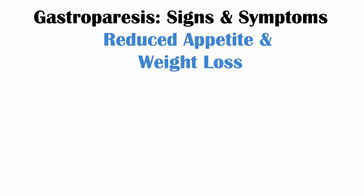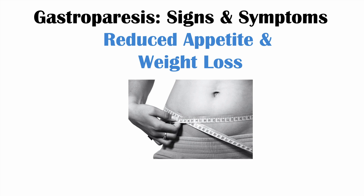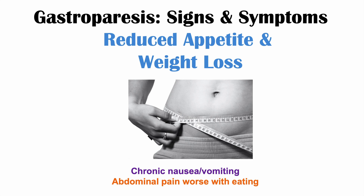Individuals can also have reduced appetite and weight loss. This is mostly due to chronic nausea and vomiting — because of it, individuals often don't even want to eat. The worsening abdominal pain with eating is another reason why individuals with gastroparesis often refrain from eating. Both of these lead to reduced appetite and weight loss. Early satiety also contributes to the reduced appetite.